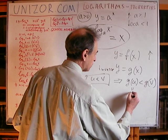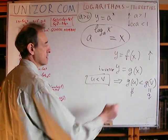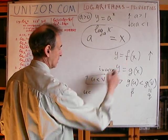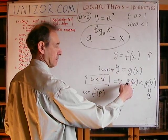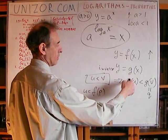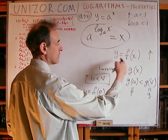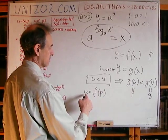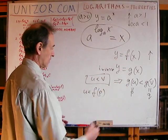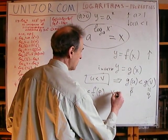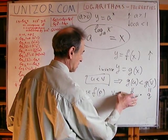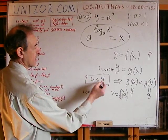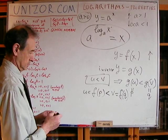Let's say G(U) equals P and G(V) equals Q. Since G is inverse of F, if P equals G(U), then U equals F(P). That's what it means for F and G to be inverses of each other. Similarly, V equals F(Q). Now we know the relationship U less than V, so F(P) is less than F(Q).